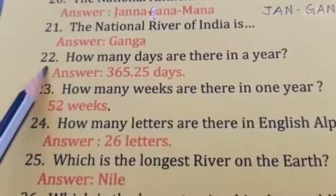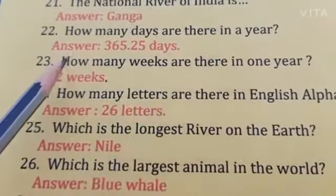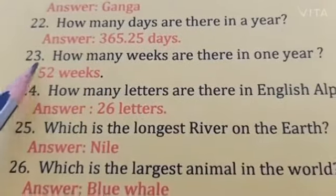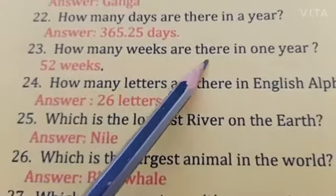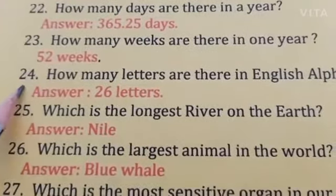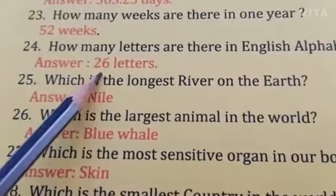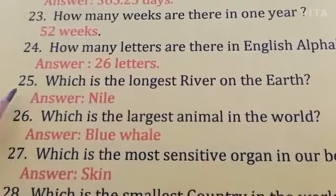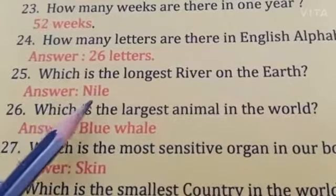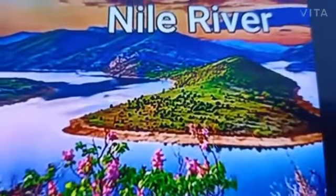Question number 22: How many days are there in a year? Answer: 365.25 days, 52 weeks. Question number 23: How many weeks are there in one year? Answer: 52 weeks. Question number 24: How many letters are there in the English alphabet? Answer: 26 letters. Question number 25: Which is the longest river on Earth? Answer: Nile. It is a very beautiful river.